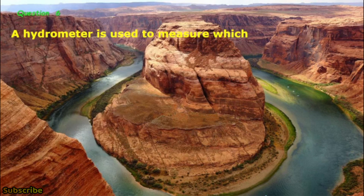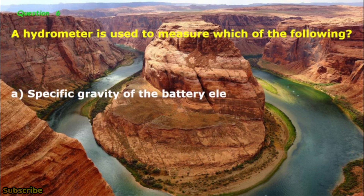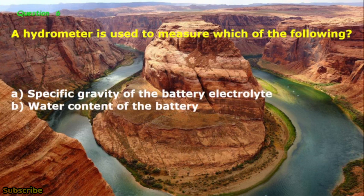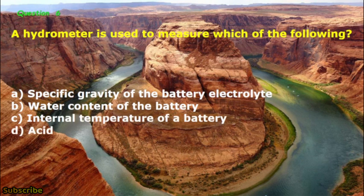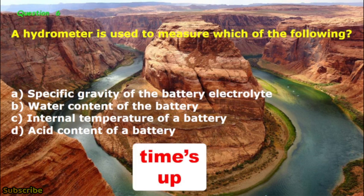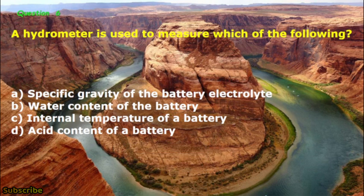Question No. 6: A hydrometer is used to measure which of the following? A. Specific gravity of the battery electrolyte, B. Water content of the battery, C. Internal temperature of a battery, D. Acid content of a battery. The correct answer is letter A: Specific gravity of the battery electrolyte.